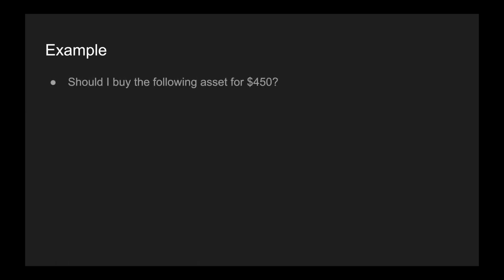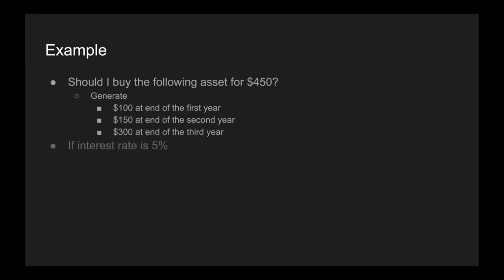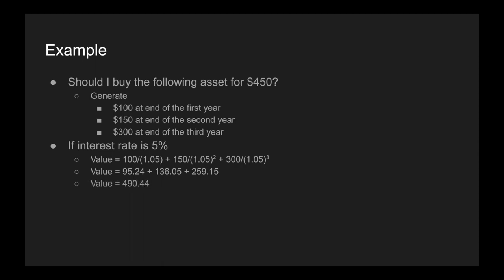Now, let's say we have the exact same example — the same asset generating the same cash flows — but now the interest rate is 5%. That $100 is discounted by 5%, that $150 discounted by 5% for two years, and that $300 discounted by 5% three times. Now these present values are a little bit bigger: $95, $136, and $259 respectively. And when we sum all of these together, we get $490.